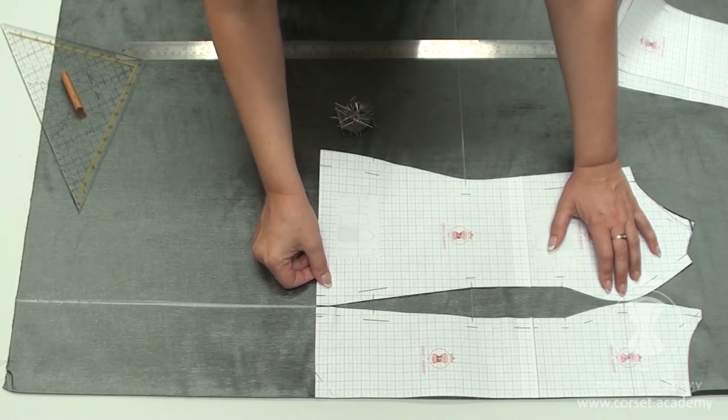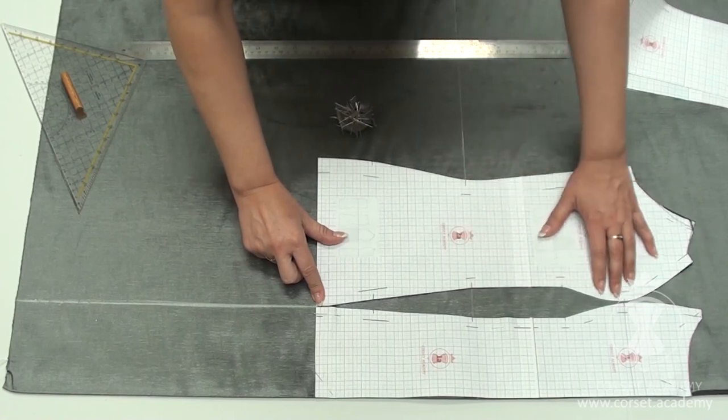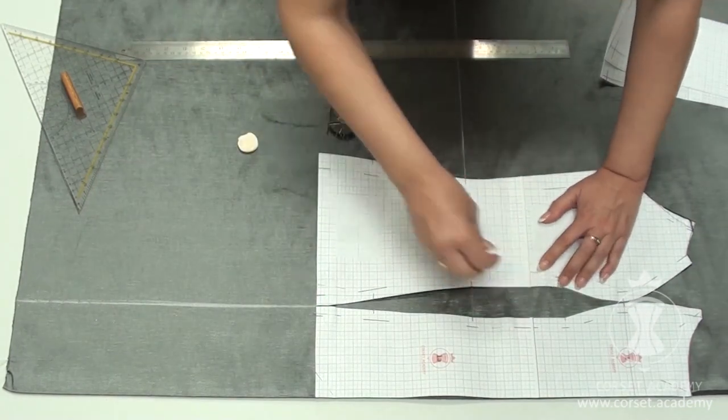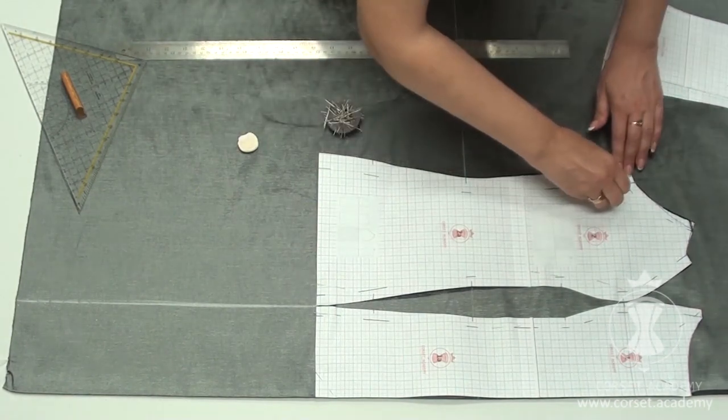I try to align them perfectly so I can separate them by simply cutting through the princess seam line. I pin down the bottom parts as well to prevent them from shifting against each other.